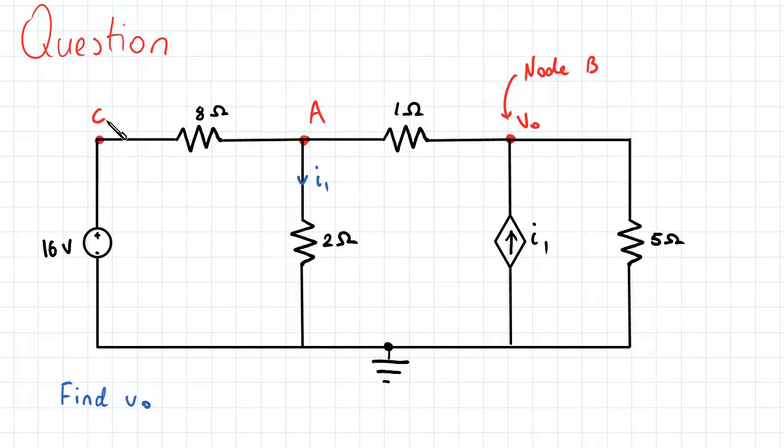So in order for us to begin our analysis, we look at node A. Now node A has a current flowing through the 2 ohm resistor to the reference node, and this is known to be I1. This I1 is coincidentally the same value as our dependent current source over here. We also assume that there is a current flowing from node A to node C in this direction like so.